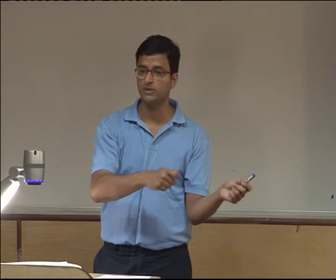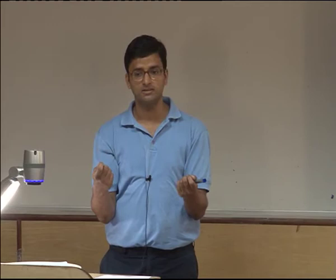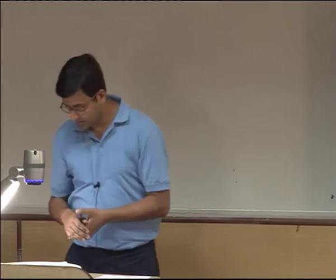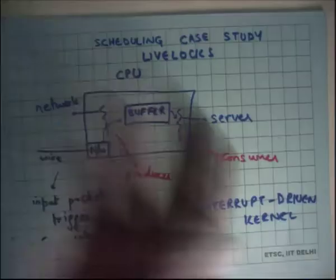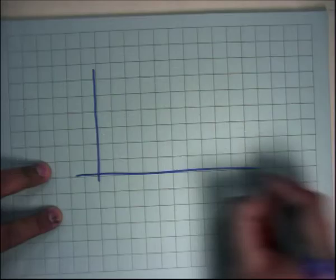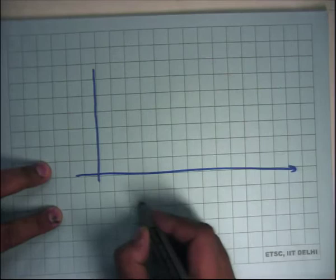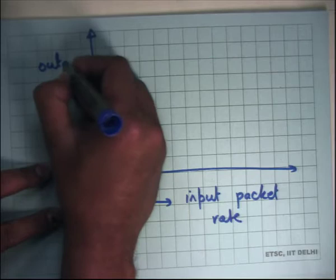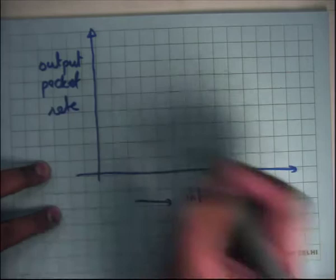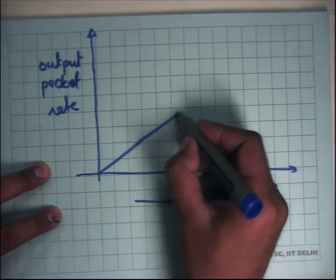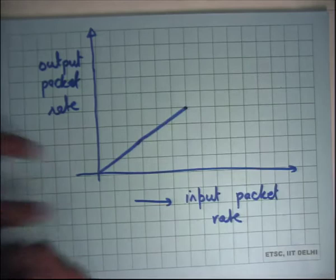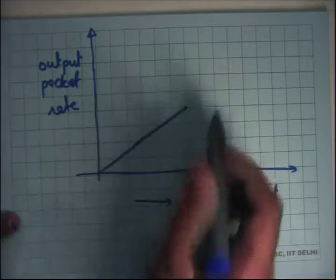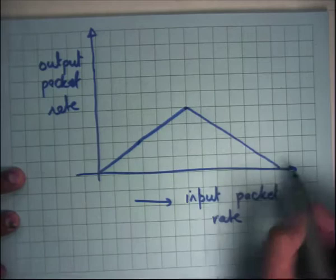If we draw a curve between input packet rate and output packet rate — assuming the server sends a reply for every packet — the curve will be pretty much linear for low rates. But at some point, when the input packet rate is so high that the server saturates, you'll see a drop in throughput until it reaches zero. This is the point where the server saturates.